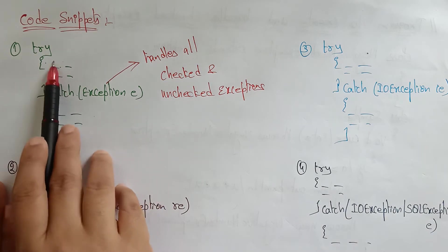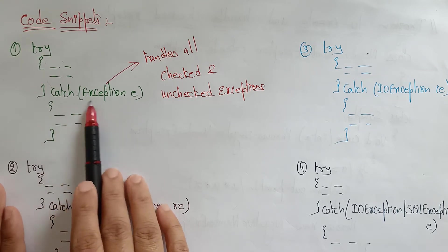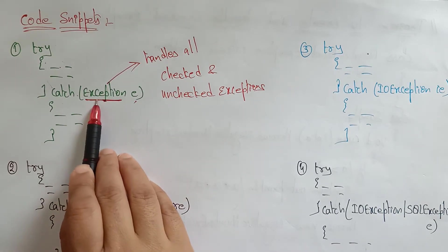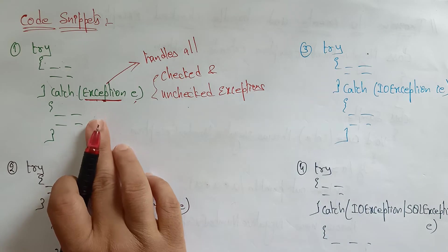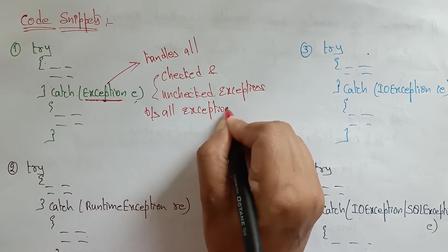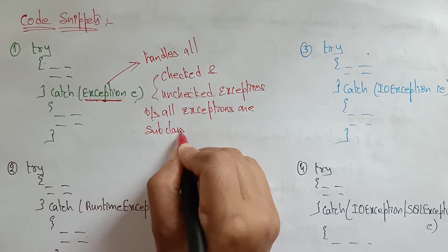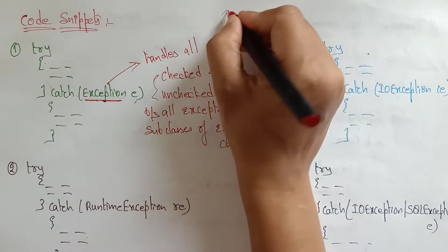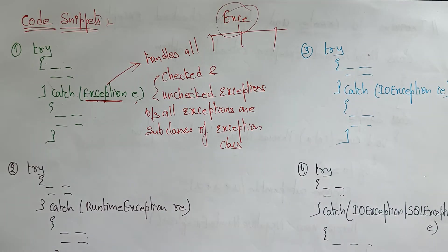In the first code snippet, I have shown a try block with some task, and a catch block. The exception is handled using the Exception class with object reference E. What type of exception does it handle? It handles all checked and unchecked exceptions, because all exceptions are subclasses of the Exception class. Exception is a superclass, so it is going to handle all checked and unchecked exceptions.